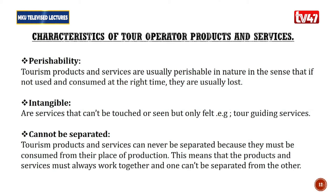Characteristic number two is intangibility. Intangible means not able to touch something, but you can only feel it. The services in tourism can't be touched or seen, but can only be felt — for example, tour guiding services. When you go on a safari with a tour operator who is offering guiding services, there is no way you can touch those services, but you can feel them. Similarly, when you walk into a hotel and are served, you can only feel the service but cannot touch it.